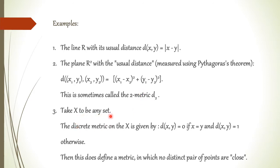Also, let X be any set. The discrete metric on X is given by: when the points are the same the distance is 0, and when the points are different the distance is 1. This D is said to be the discrete metric on X, and it defines a metric on X in which no distinct pair of points are close.